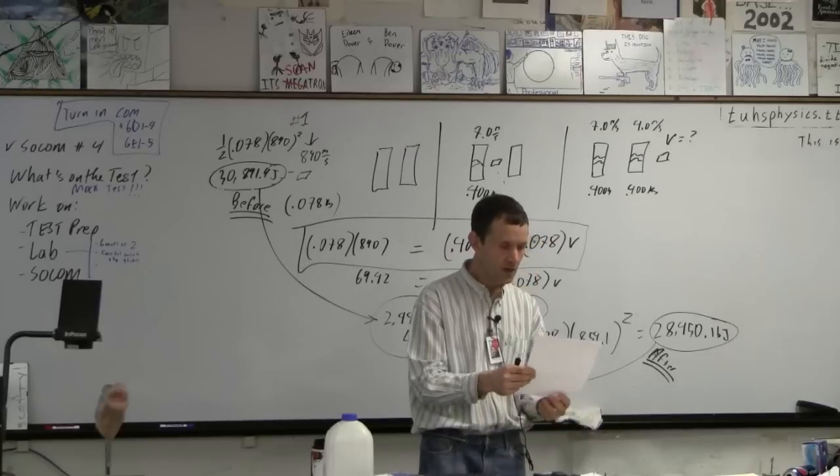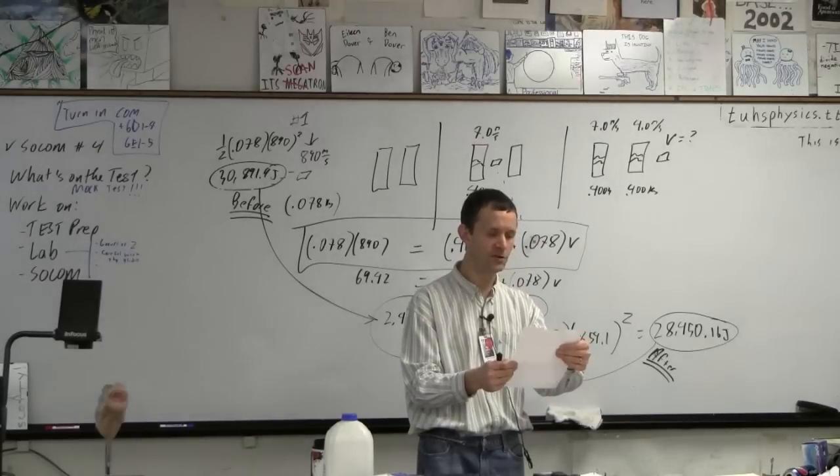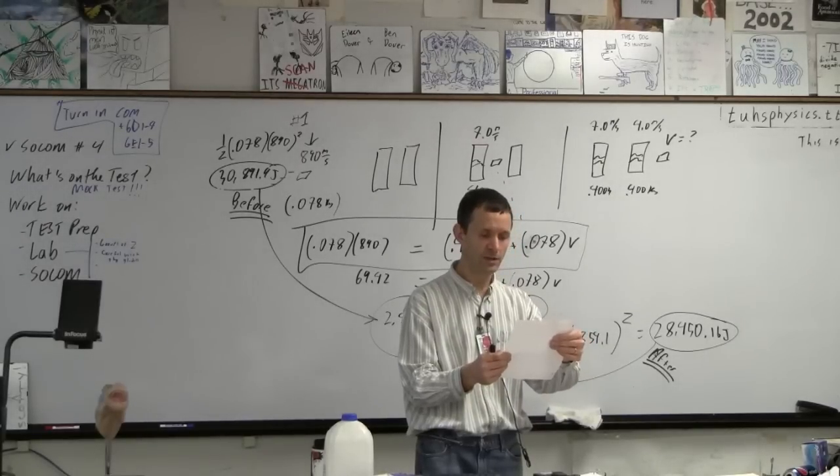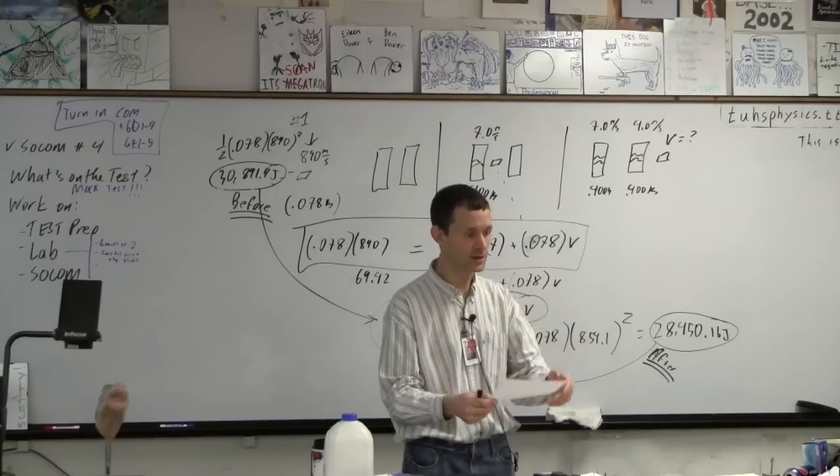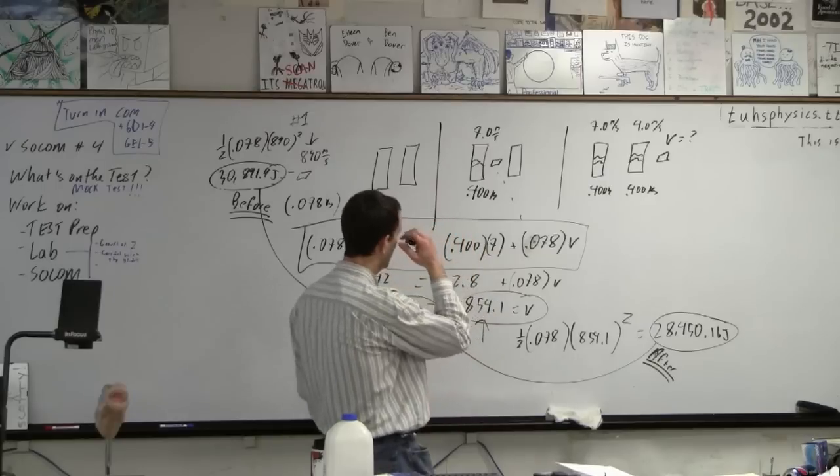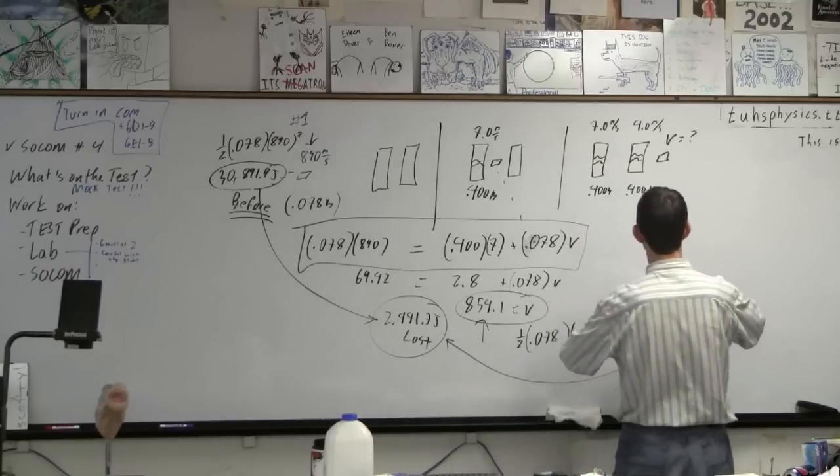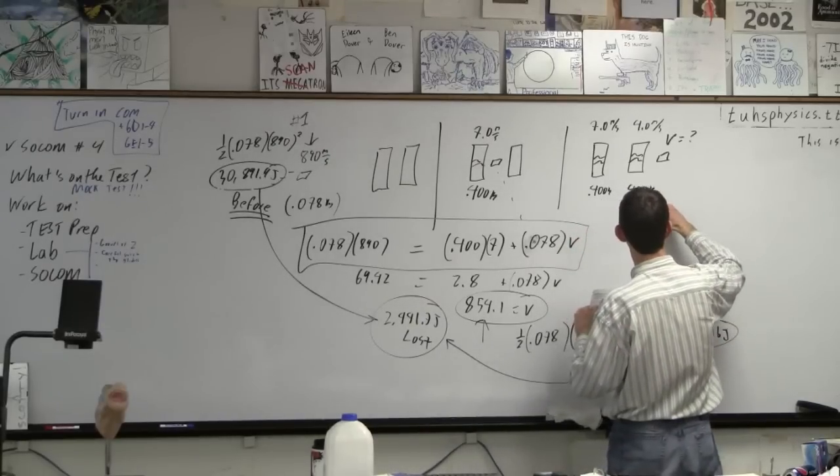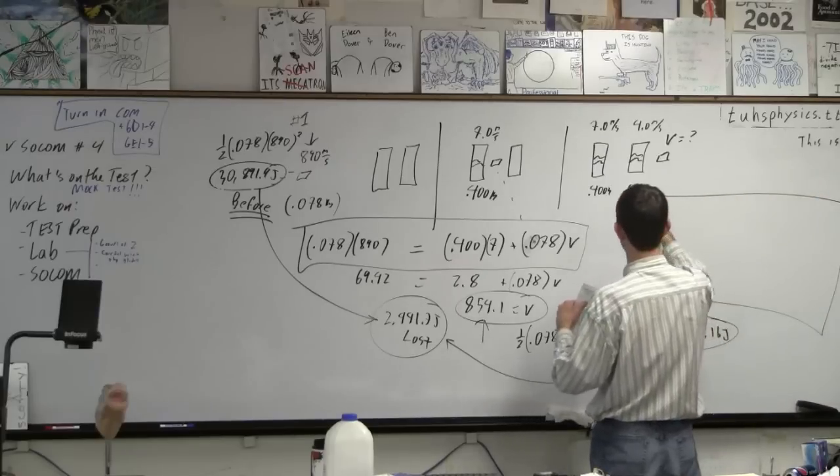And then it says, if the bullet exerted 5,150 newtons on the first block, how long did the bullet take to go through it? So this is a force time equals mass change in velocity one. Okay, so we're talking about the first block, and so this is all the linear thinkers. I'm solving part D right now. All right. This is the space I've carved out for D.